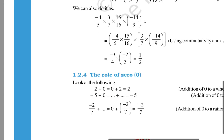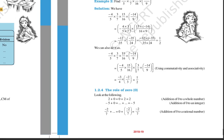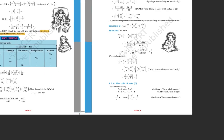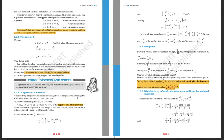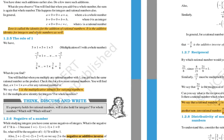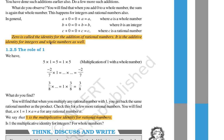The role of zero: if we add zero to any number, the number remains the same. This is called additive identity. Zero is called the identity for addition of rational numbers — it is the additive identity for integers and whole numbers as well.